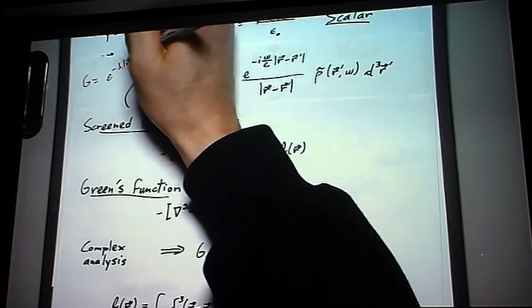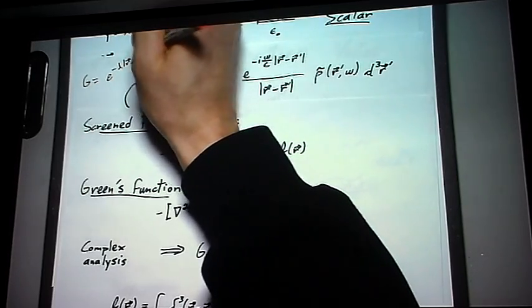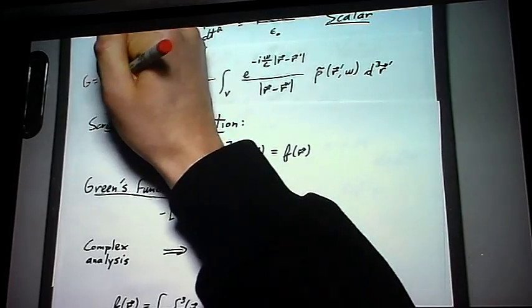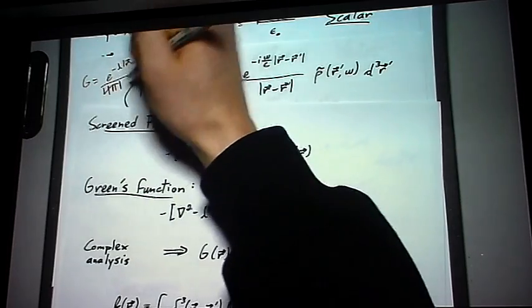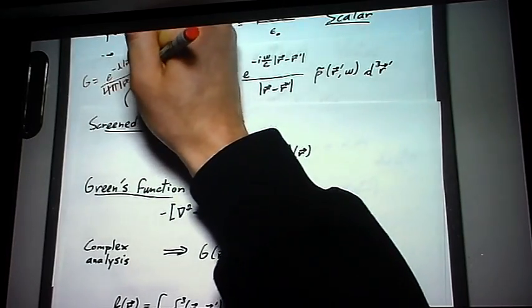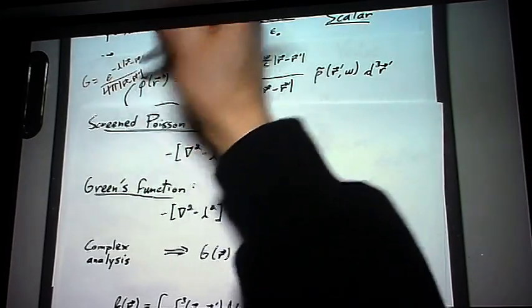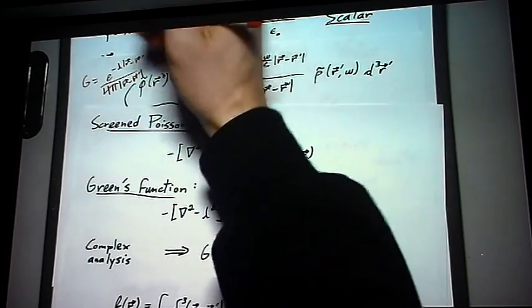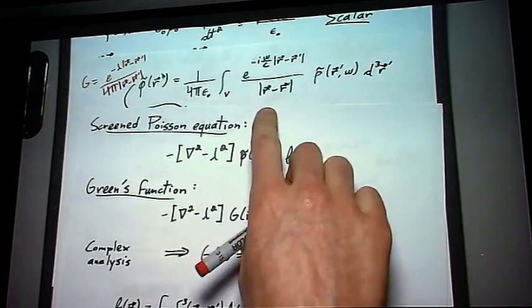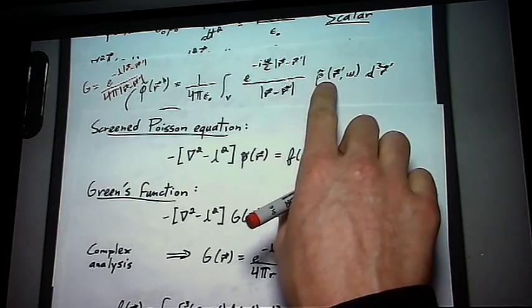There we go. So that's what we replaced right in here, and we replaced our function f, which was rho over epsilon, and r prime in there.